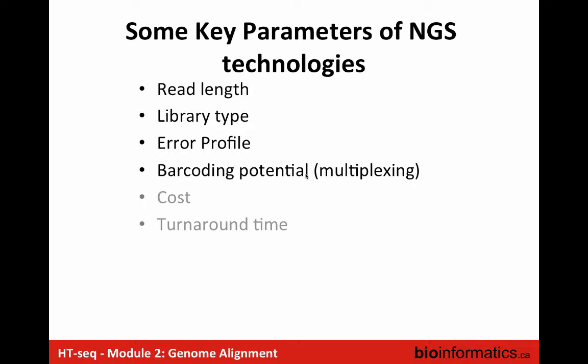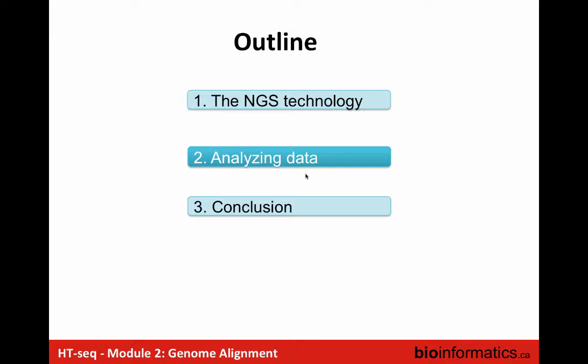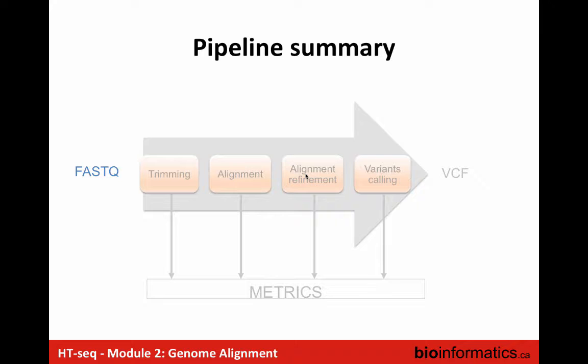In this practical, we will focus on DNA-seq analysis. When we talk about DNA-seq, we can summarize the analysis like this: we start from FASTQ — the output from the sequencer — and we want to go to a VCF file containing the variants. This covers all the steps from raw sequencer data to a file that gives you the variants present in your DNA.